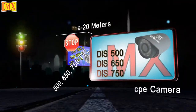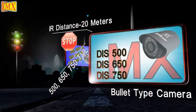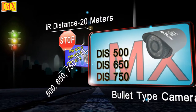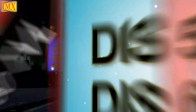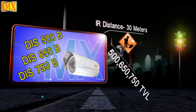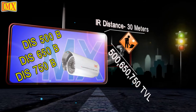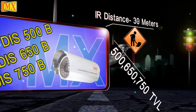DIS-500, DIS-650, and DIS-750 with resolution 500, 650, and 750 TV lines. The difference between these bullet cameras and the previous ones is that this has an IR distance of 30 meters.